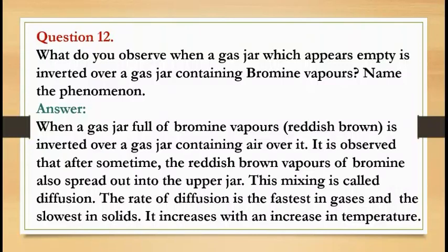Question number 12: What do you observe when a gas jar which appears empty is inverted over a gas jar containing bromine vapors? Name the phenomenon. Answer: When a gas jar full of bromine vapors, which is reddish brown in color, is inverted over a gas jar containing air, after some time the reddish brown vapors of bromine spread out into the upper jar. This mixing is called diffusion. The rate of diffusion is fastest in gases and slowest in solids, and it increases with an increase in temperature.